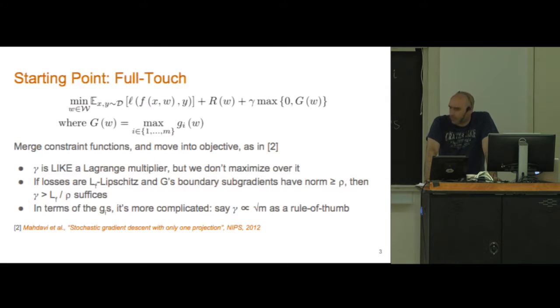As a rule of thumb, if you're just looking for a sense of how large gamma might be, I think that gamma about square root of m is a reasonable thing to keep in mind going forward, but depending on the particular constraints under consideration it might be larger or smaller.